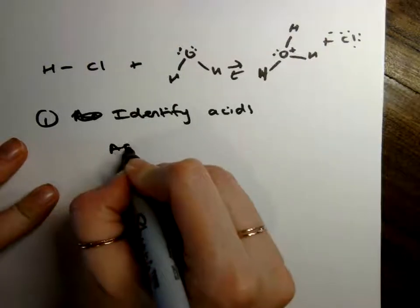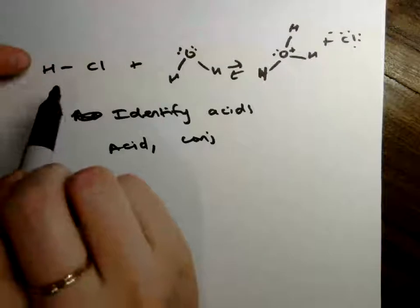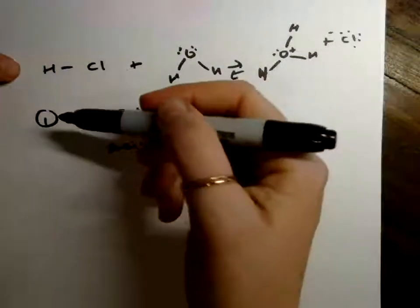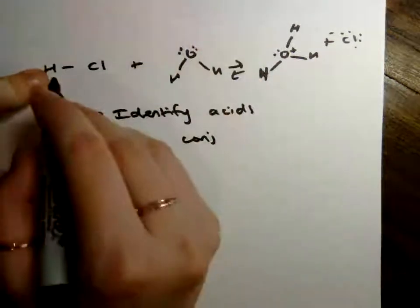And what I mean by this is acid and conjugate acid. So which one is an acid each direction? And generally we can go by the Bronsted-Lowry definition for this, which means is it generating a proton, essentially.